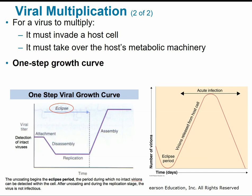The multiplication of viruses is demonstrated with a one-step growth curve. Following initial infection, complete assembled viruses cannot be found in the host cell — the cell is just making all the separate components, copying DNA and making proteins. This is called the eclipse period, where the number of detectable viruses drops to nearly nothing. As the cell begins to assemble viruses and releases them, there is a sharp increase in virus numbers during an acute infection, followed by a drop-off when new viruses are no longer being produced.